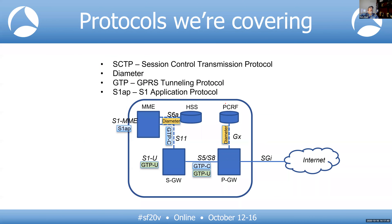This shows the protocols used on the particular interfaces — the S-interfaces and the GX interface. The four protocols we'll cover are SCTP, Diameter, GTP version 1, GTP version 2, and S1AP.